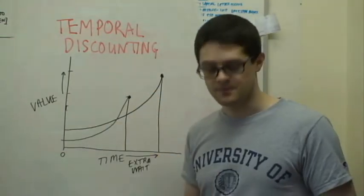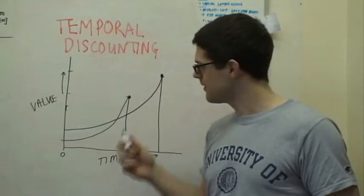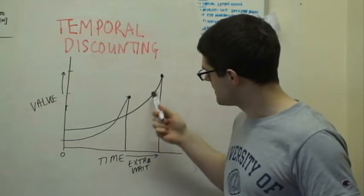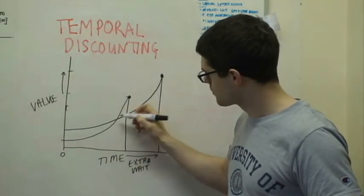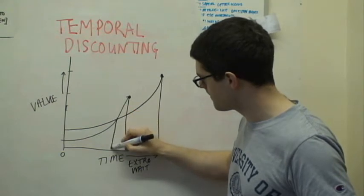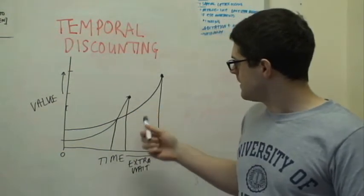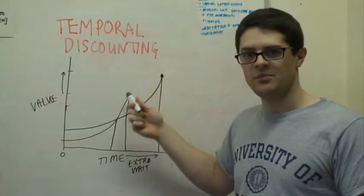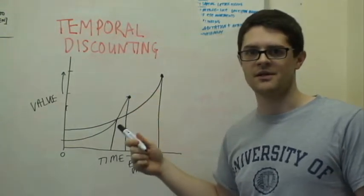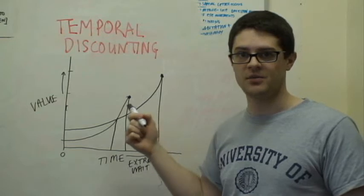Right, so the important thing you'll see about this is basically that the curves cross over at this point. I'll talk about that in a minute. So this is essentially called hyperbolic discounting and this is the descriptive model.